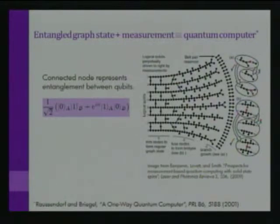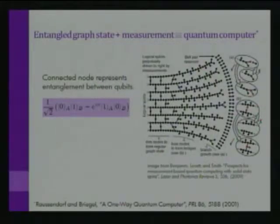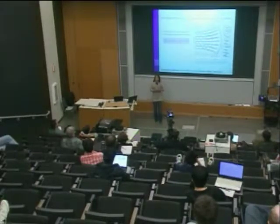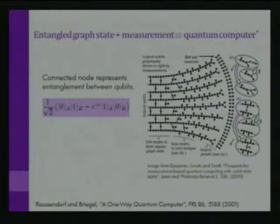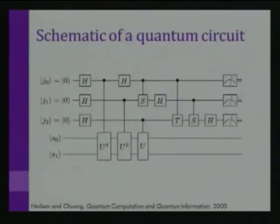Raussendorf and Briegel showed that if we can create entanglement — where each line between nodes means those qubits are entangled — we can perform an arbitrary quantum computation by doing only single quantum bit measurements at each node. The problem becomes not making gates but creating this huge network of entangled quantum bits. One positive aspect is that we can create this graph state indeterministically — we can have some probability of failure. Whereas in the circuit model, if one operation failed we'd have to restart the whole calculation.